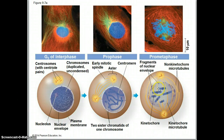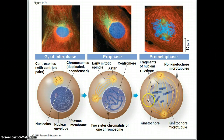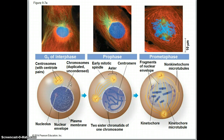The nuclear envelope is going to be almost completely broken up at this point. Also note that there are centrioles here because this is an animal cell. If we were looking at a plant cell, you would not see centrioles — just centrosomes. Centrioles just kind of help with the organization of the spindle.